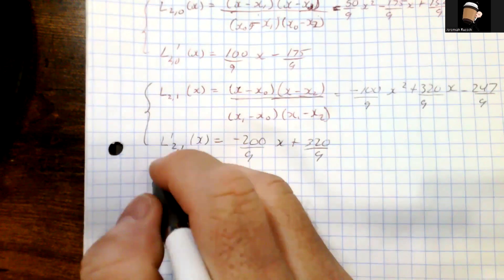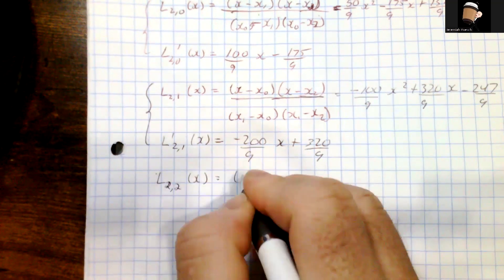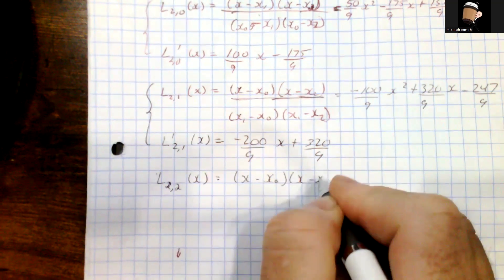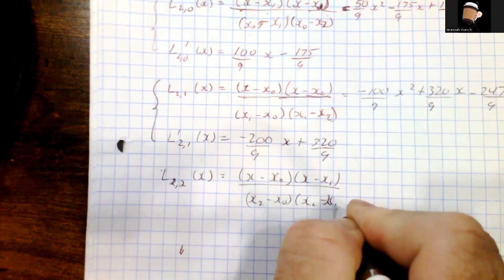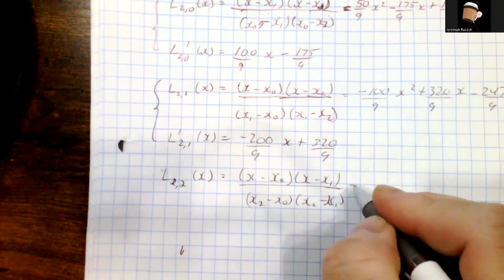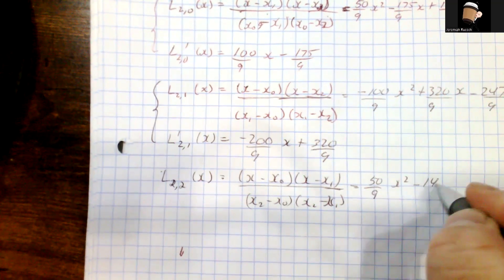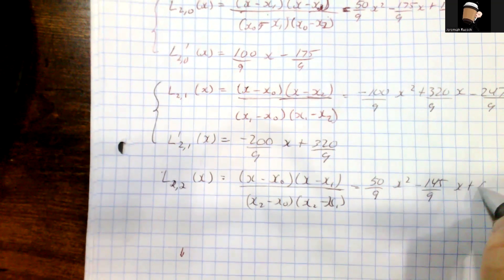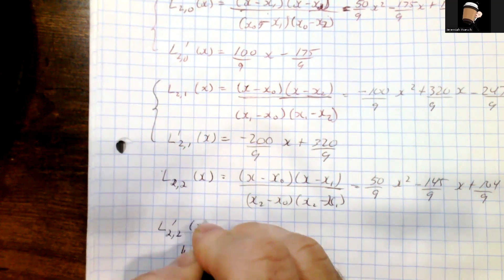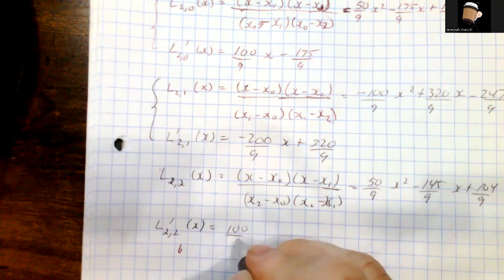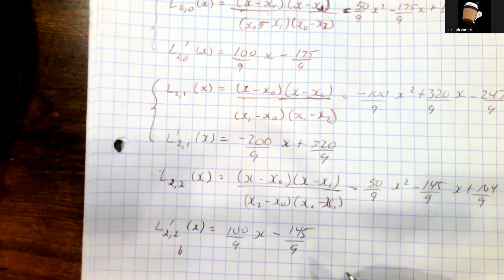Finally, L₂₂(x) is (x − x₀)(x − x₁) over (x₂ − x₀)(x₂ − x₁), which gives 50/9 x² − 145/9 x + 104/9. Computing the derivative L₂₂′(x) gives 100/9 x − 145/9.